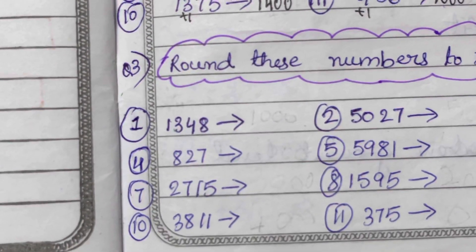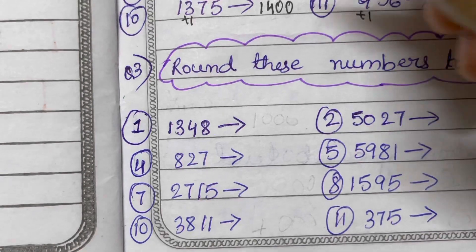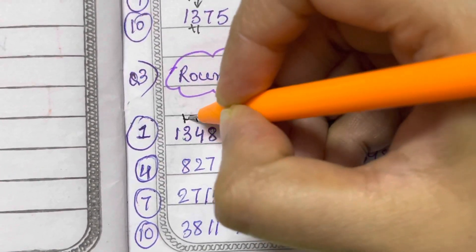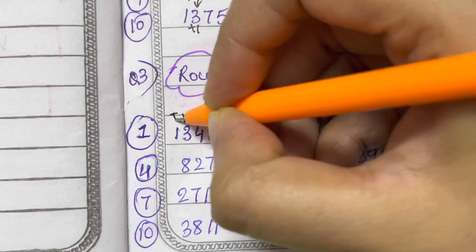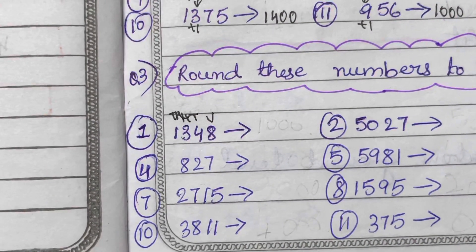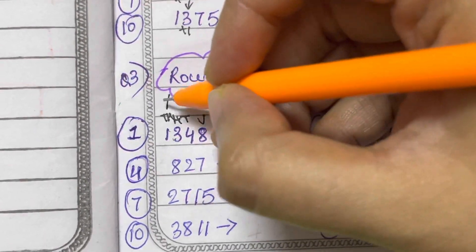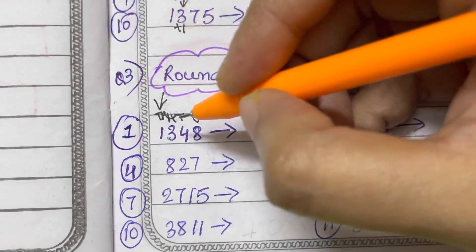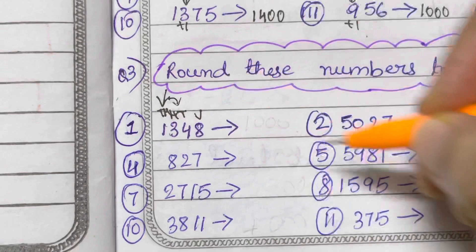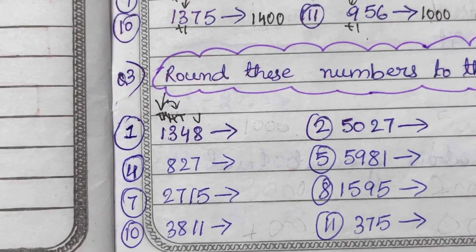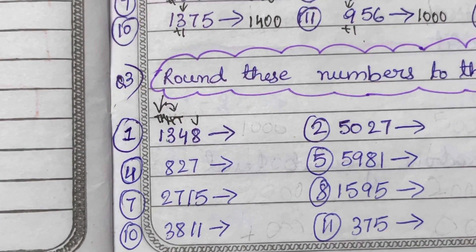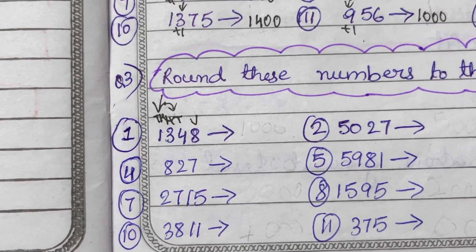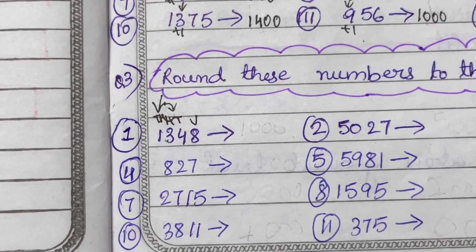We just need to write the place value: units, tens, hundreds, and thousands place. One is at the thousands place and we are going to check the digit after that. If it is 5 or more than 5, we add plus 1 to the thousands place. If it is less than 5, the thousands place remains unchanged.